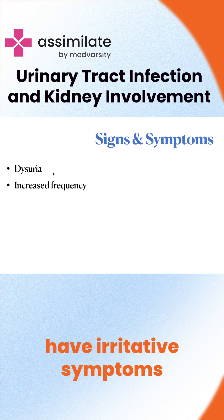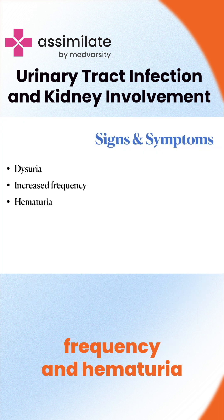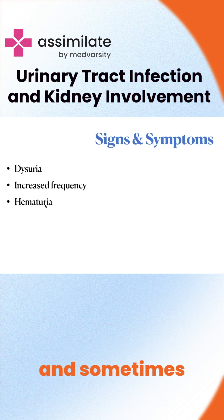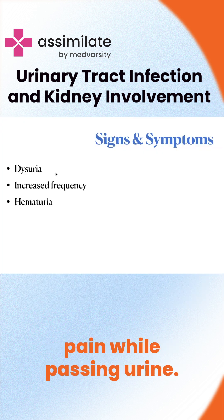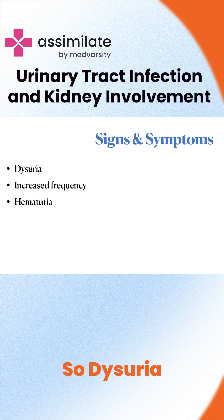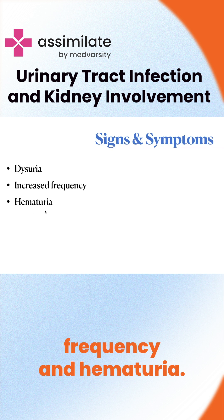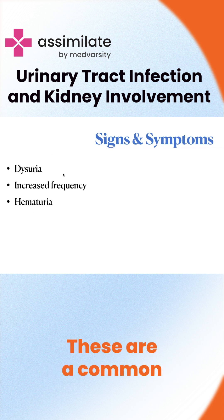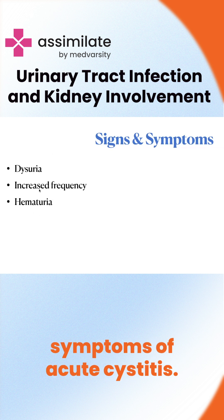You may also have irritative symptoms like increased frequency, hematuria, and sometimes pain while passing urine. Dysuria, frequency, and hematuria are the common symptoms of acute cystitis.